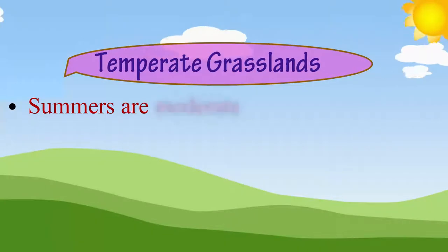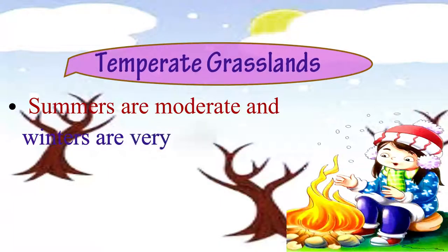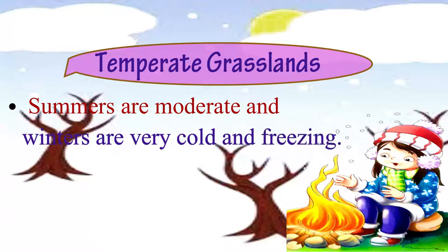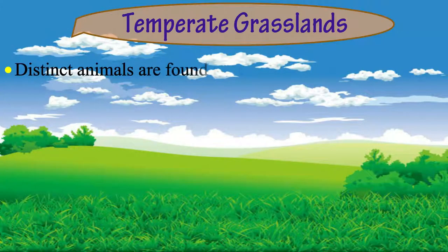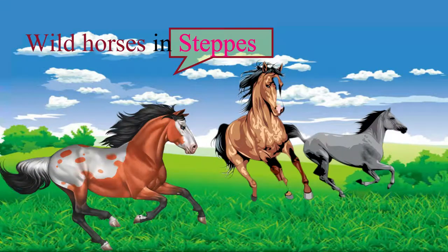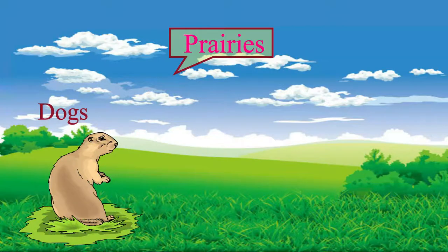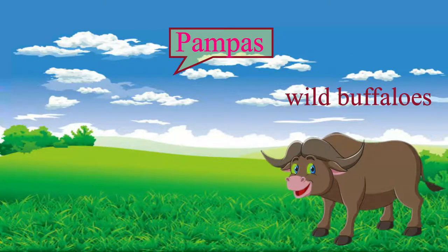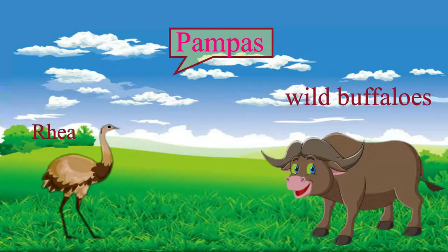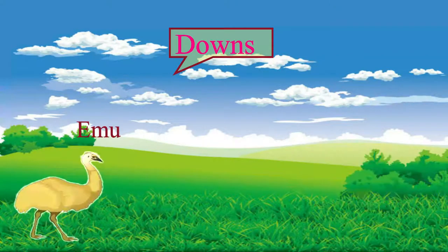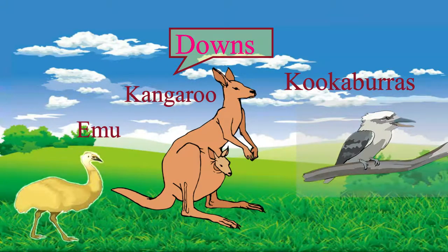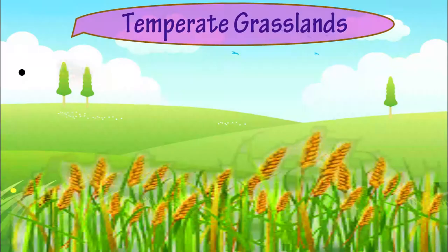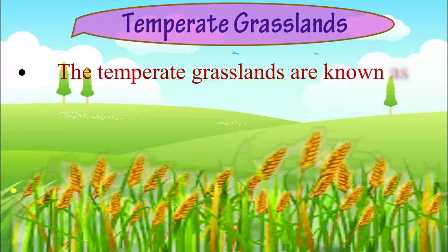The summers are moderate and winters are very cold and freezing. Distinct animals are found in temperate grasslands, such as wild horses in steppes, dogs and bison in prairies, wild buffaloes and rhea in pampas, and emu, kangaroo, and kookaburras in downs.